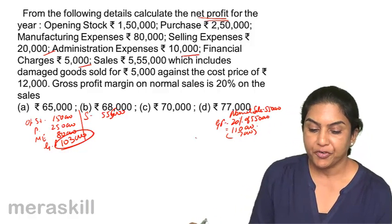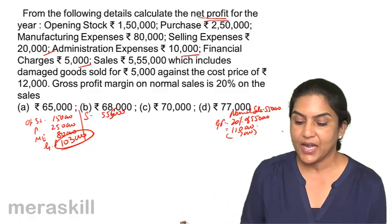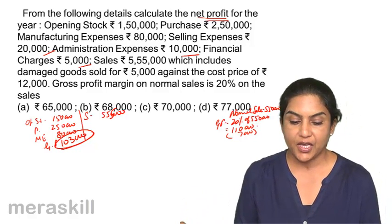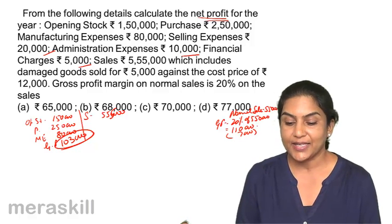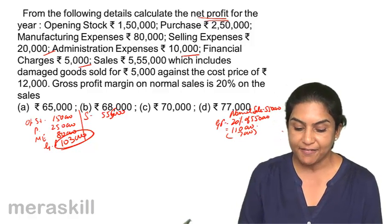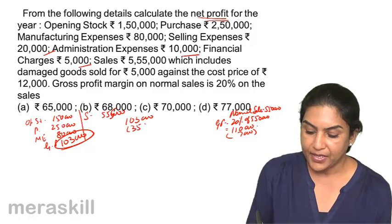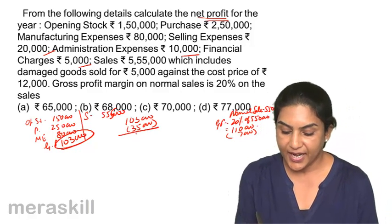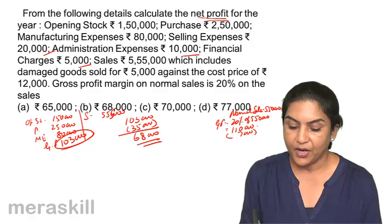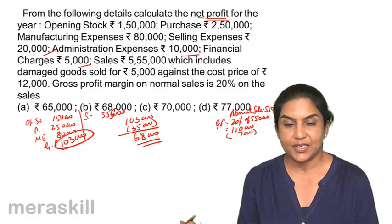Gross profit of 1,03,000. You have selling expenses of 20,000, administration expenses of 10,000, financial charges of 5,000. That adds up to 35,000. So 1,03,000 gross profit minus 35,000 — 68,000 should be the net profit.